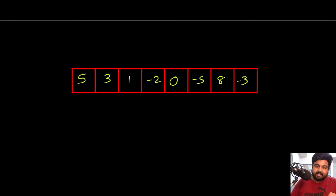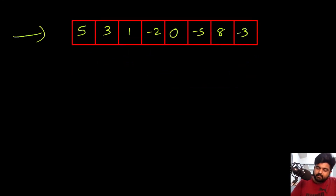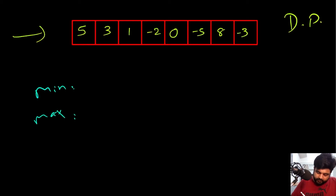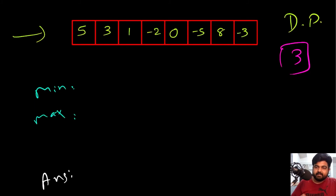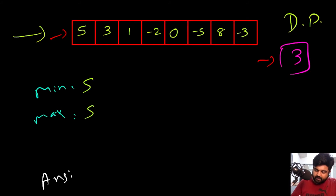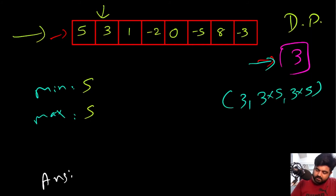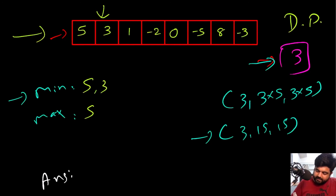Let's walk through an example using dynamic programming with two pointers — min, max, and answer. For the first value 5, there is nothing to compare against, so min = 5, max = 5. For value 3, the three candidates are: 3 itself, 3 × min(5) = 15, and 3 × max(5) = 15. So min = 3, max = 15, answer = 15. For value 1, the candidates are 1, 1×3 = 3, and 1×15 = 15, giving min = 1, max = 15, answer remains 15.